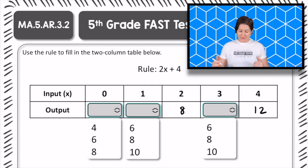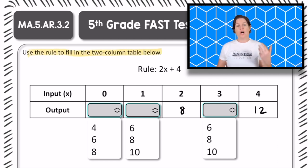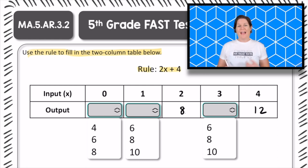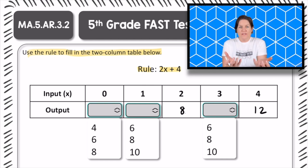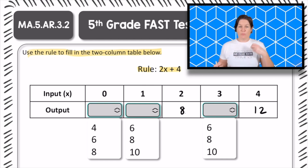All right, 5th grade, welcome back. So we see that the directions say to use the rule to fill in the two-column table below. We have the rule right here, which is 2x plus 4. That means 2 and x are being multiplied, right? And then we add 4.